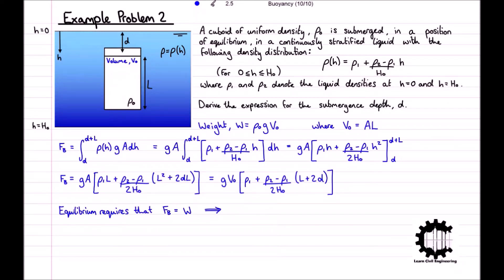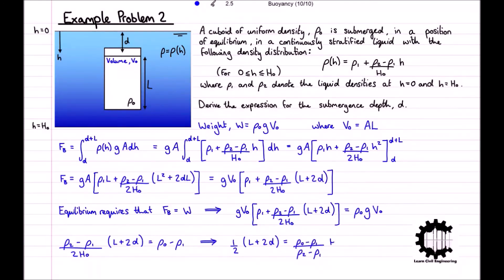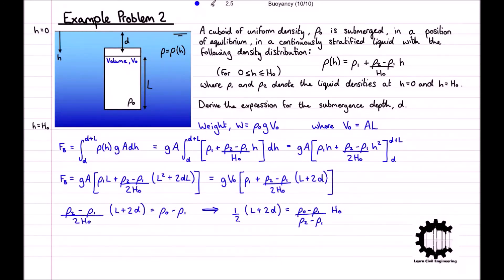Setting F_b equal to W: g v_0 times [rho_1 plus (rho_2 minus rho_1)/(2 h_0) times (l plus 2d)] equals rho_0 g v_0. Eliminating g and v_0, then subtracting rho_1 from both sides: (rho_2 minus rho_1)/(2 h_0) times (l plus 2d) equals rho_0 minus rho_1. Multiplying both sides by h_0 and dividing by (rho_2 minus rho_1): 1/2 times (l plus 2d) equals (rho_0 minus rho_1)/(rho_2 minus rho_1) times h_0. Rearranging for d gives d equals (rho_0 minus rho_1)/(rho_2 minus rho_1) times h_0 minus l/2. This is the expression for the submergence depth d of the cuboid.